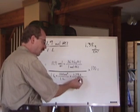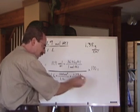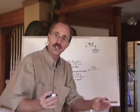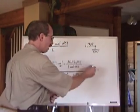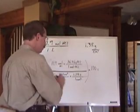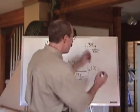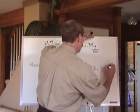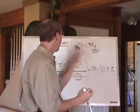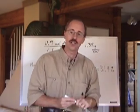And so in the end, you're left with grams of what? This is grams of solution. When you multiply all of this by 100, you get yourself the answer, which is 31.4% HCl in the solution.